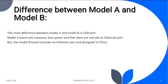Hello, this is Akanksha, roll number 56. I'm going to explain the difference between Model A and Model B. Model A has only one USB port and no Ethernet port, whereas Model B has two USB ports and has an Ethernet port.